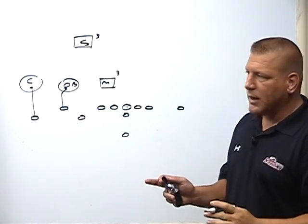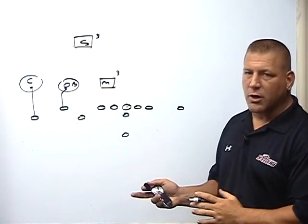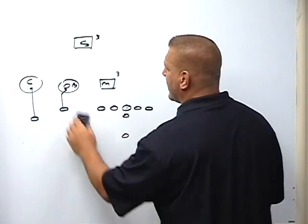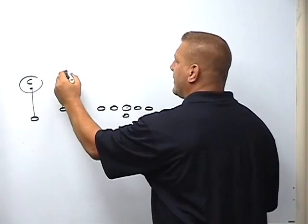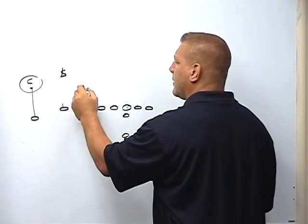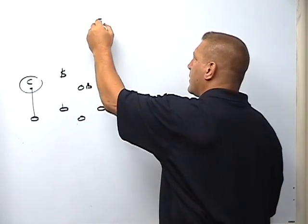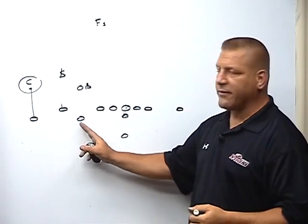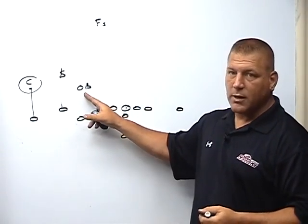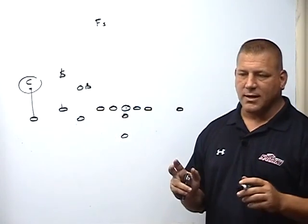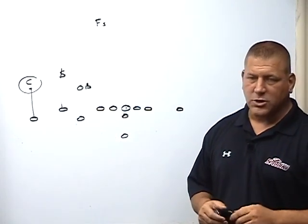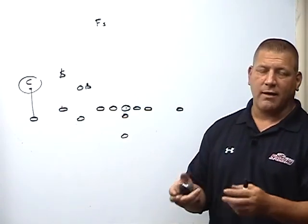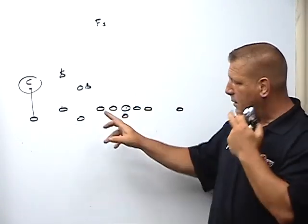If we change this defense — if they roll a safety down or spin a safety down — we've got an outside backer here and a free safety over the top. They are three for three. We do not have a leverage advantage on number three, and we feel that this is not a very good situation to run bubble. It's common sense, but very often when I evaluate film and we see bubble run in this situation, this is a...